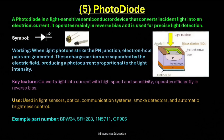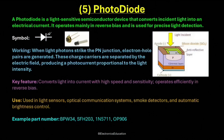A photodiode is a light-sensitive semiconductor device that converts incident light into an electrical current, operating mainly in reverse bias and used for precise light detection. It is specifically designed to respond quickly to variations in light intensity, and is one of the most important components in modern optical and sensing systems. A photodiode has a similar structure to a P-N junction diode, but with a transparent window or lens that allows light photons to strike the junction region. When light falls on the diode, photons with sufficient energy excite electrons from the valence band to the conduction band, creating electron-hole pairs in the depletion region. These charge carriers are then separated by the electric field across the junction — electrons move toward the N region and holes move toward the P region — resulting in a photocurrent proportional to the intensity of the incident light. The stronger the light falling on the photodiode, the higher the current it generates. In normal operation, the photodiode is reverse biased, which widens the depletion region and reduces junction capacitance.